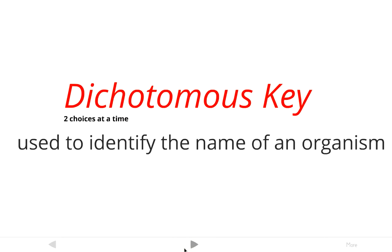A dichotomous key is basically just something that scientists use to identify the name of an organism. The 'di' at the very beginning of that word means two, so it's set up as two choices at a time. In fact, it's kind of like a big game of 20 questions.